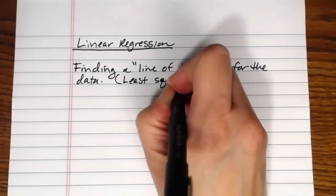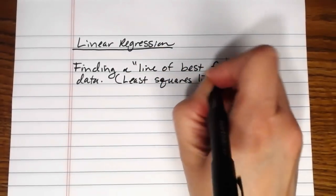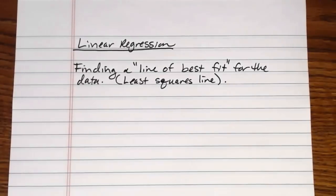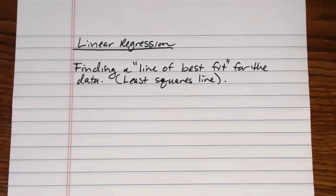So we'll talk about why this term least squares, where does that come from. So I want to give you the theory behind this first then I want to show you how to find it in the calculator and then I want to talk to you a little bit about the things that we can use the linear regression line for. So first I'm going to grab us some data.